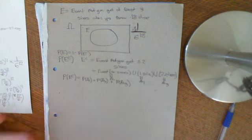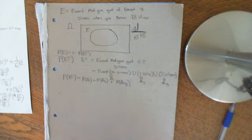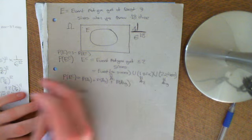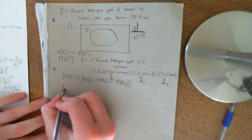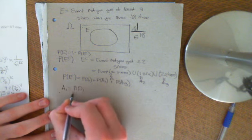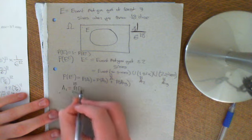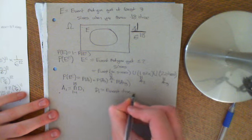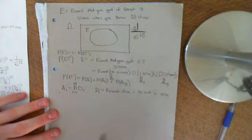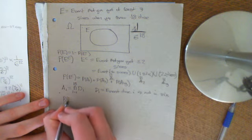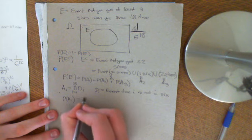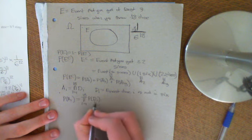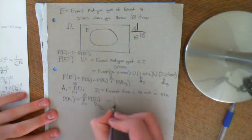P(A1) — the probability of no sixes — is the intersection of Di for i = 1 to 18, where Di is the event that die i is not a six. By independence, P(A1) equals the product of P(Di) for i = 1 to 18, and since each P(Di) = 5/6, we get P(A1) = (5/6)^18.